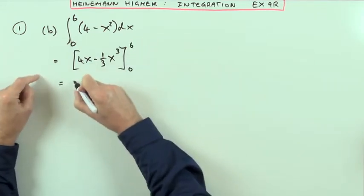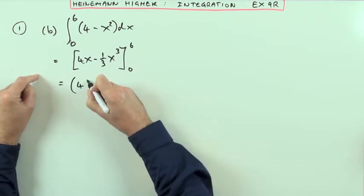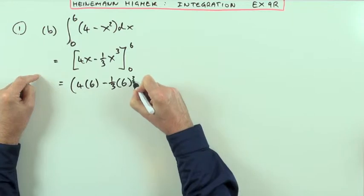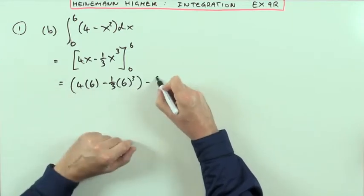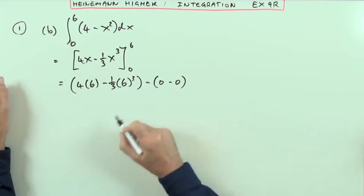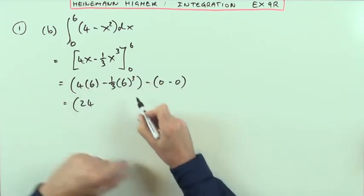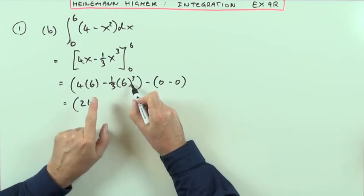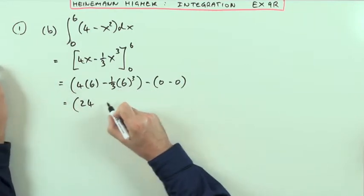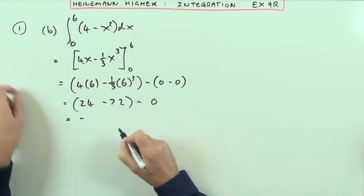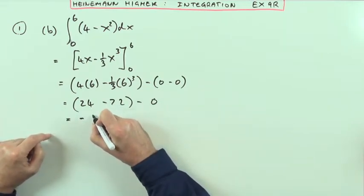So I'm evaluating it at 6, being its final value. So that's 4 times 6, minus 1/3 of 6 cubed, minus 0 for those two parts because they only involve x and x is 0. So that's 24. That's going to be 36 times 6, which 1/3 of it is 2. So it's going to be 72. Take away 0. So that's going to give me negative 48 altogether.